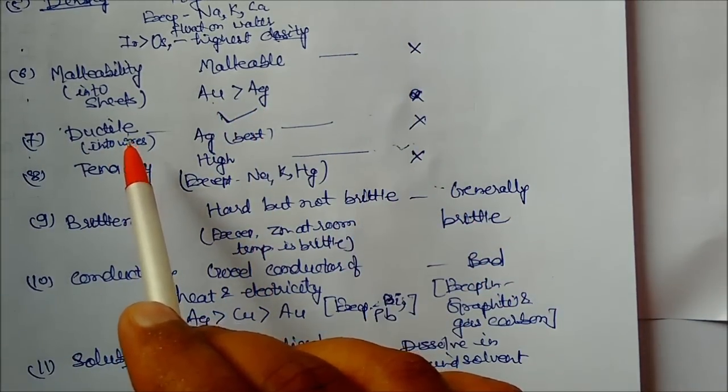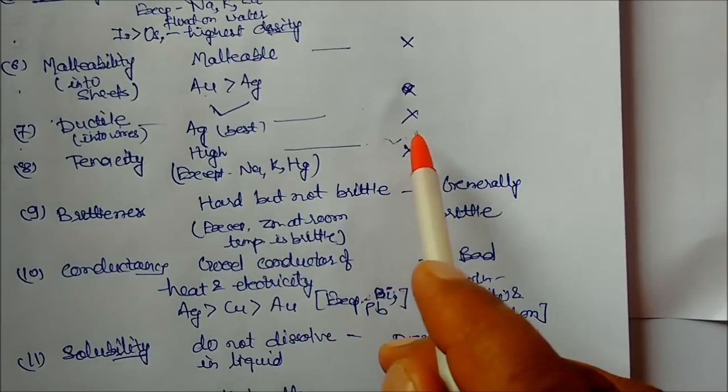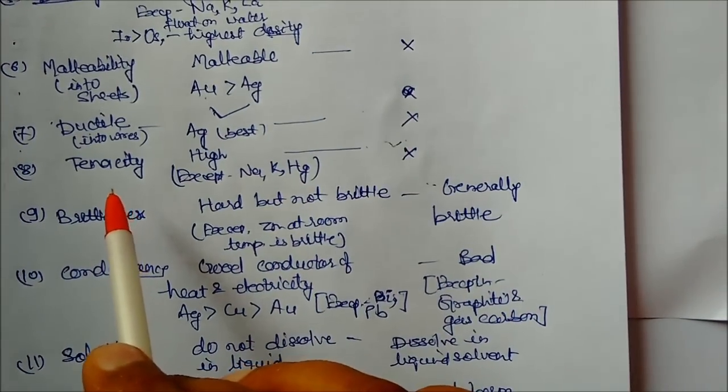Ductile means metals you can convert into wires. Here, silver is the best. In nonmetals, nobody has this property.